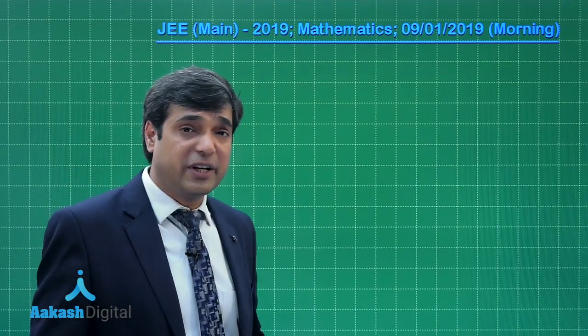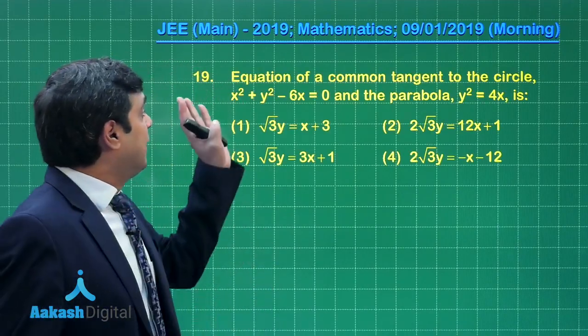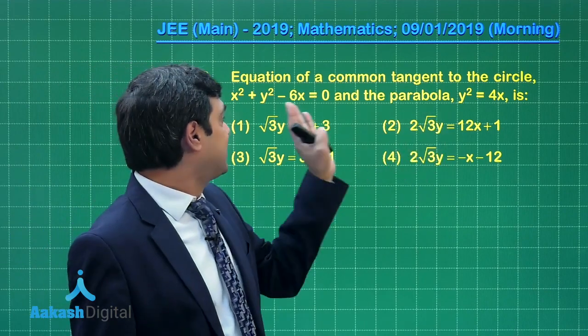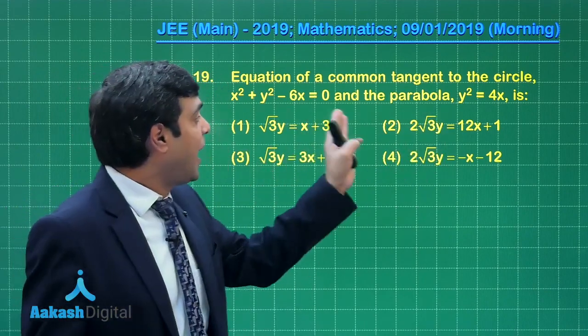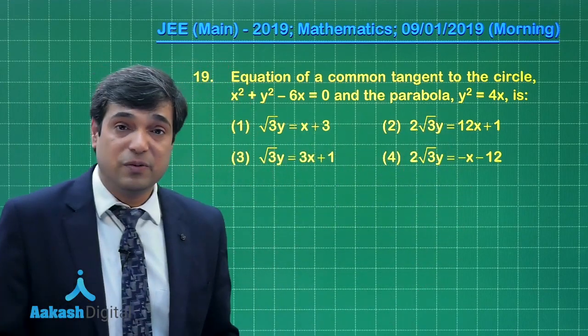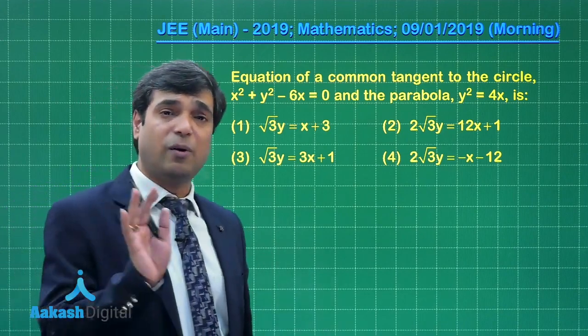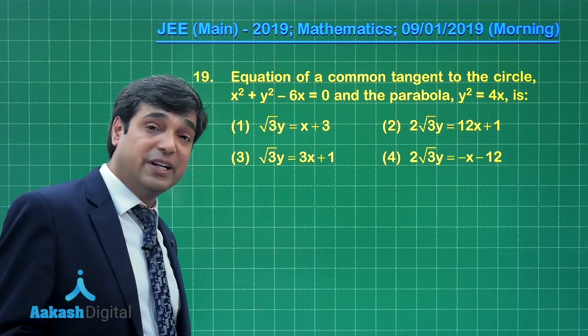Moving on to the next question, that is question number 19. Equation of a common tangent to the circle, one equation is given, and the parabola y² = 4x is a simple question from coordinate geometry. How do we start this kind of question?